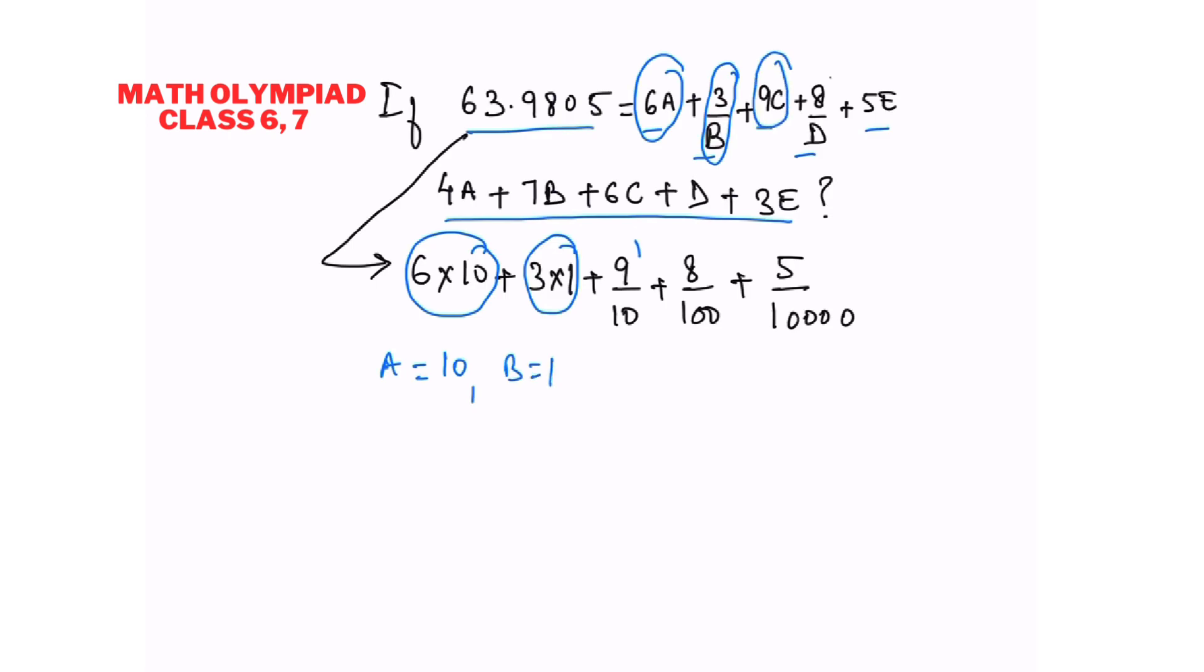9c is equal to 9 by 10 so c is equal to 0.1. 8 by d is equal to 8 by 100 so d is equal to 100.